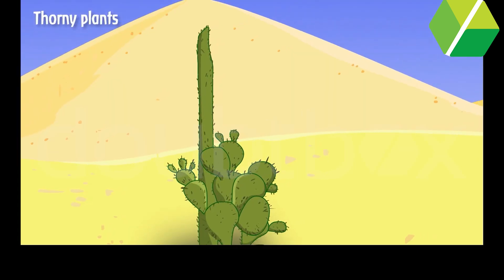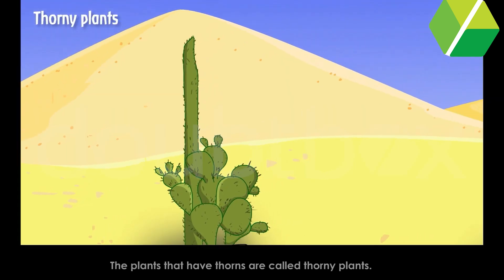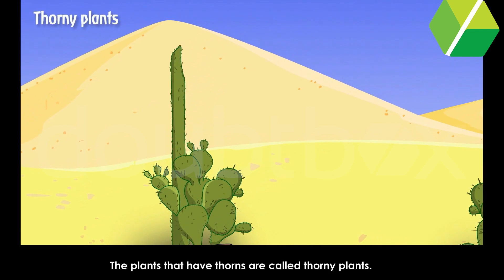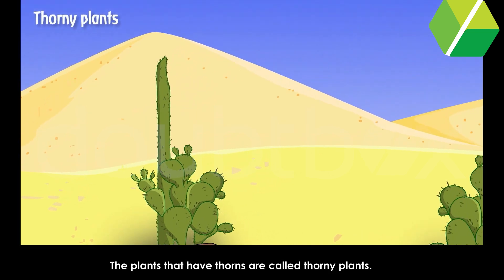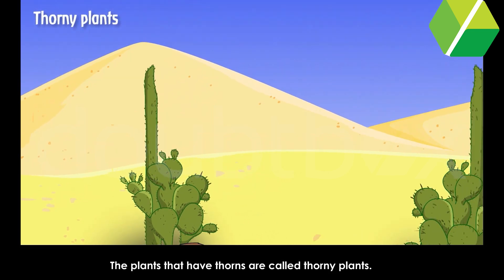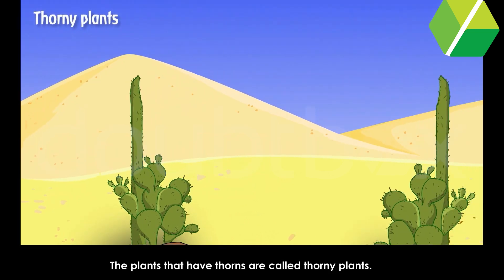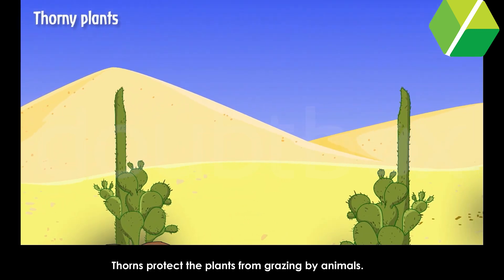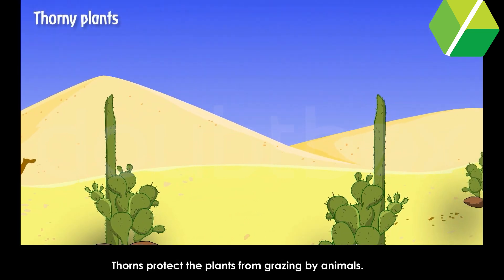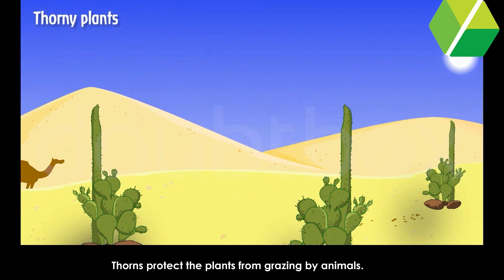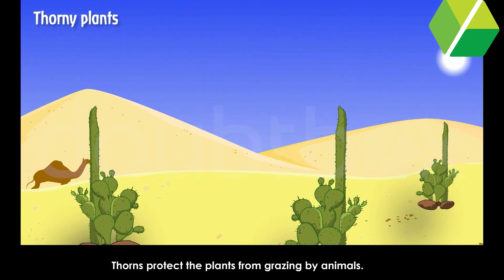Thorny plants: The plants that have thorns are called thorny plants. Thorns protect the plants from grazing by animals.